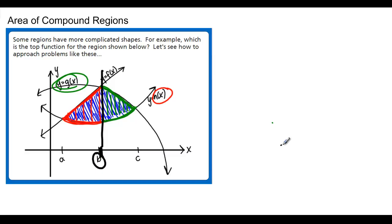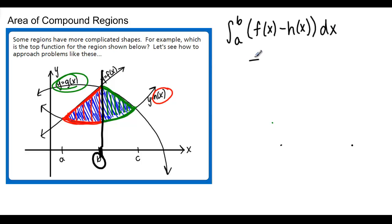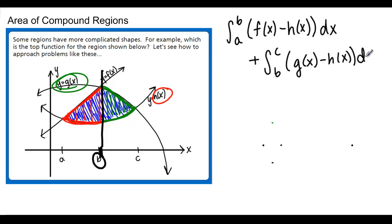We're going to split this area up at point B so that we can compute each region separately. This is going to look like: the integral from A to B of our top function — in this case F of X for the red region — minus our bottom function H of X, dx. Then we add to that the integral from B to C of our new top function — G of X for the green region — minus the same bottom function H of X, dx. The important thing is that whenever your top or bottom function changes, you need to make a new integral. It's the only way to account for a different top or bottom function.